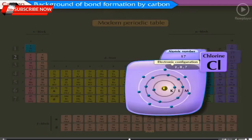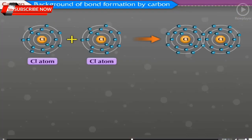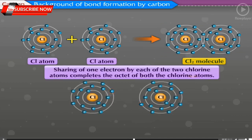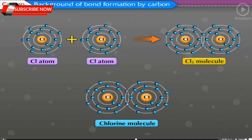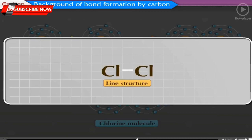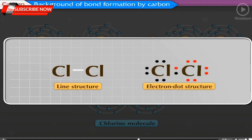The atomic number of chlorine is 17 with electronic configuration 2, 8, 7 — the valence shell has 7 electrons. A chlorine molecule (Cl₂) contains two chlorine atoms. Sharing of one electron by each chlorine atom completes the octet of both atoms, forming one pair of shared electrons and a single covalent bond. In the line structure, this is written as Cl−Cl, and is also represented by the electron dot structure.